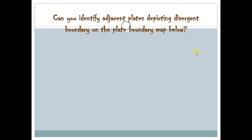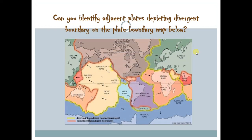We call it divergent plate boundary. Now, can you identify adjacent plates depicting divergent boundary on the plate boundary map? In this picture, we can actually identify several divergent plate boundaries as depicted by the black arrows. We can see in this map that the divergent boundaries are formed by these yellow lines. So if we have two adjacent plates moving away from each other, they are forming divergent plate boundaries. For example, we have the South American plate and the African plate — these two arrows are moving away from each other, thus we have this yellow line depicting a divergent plate boundary.